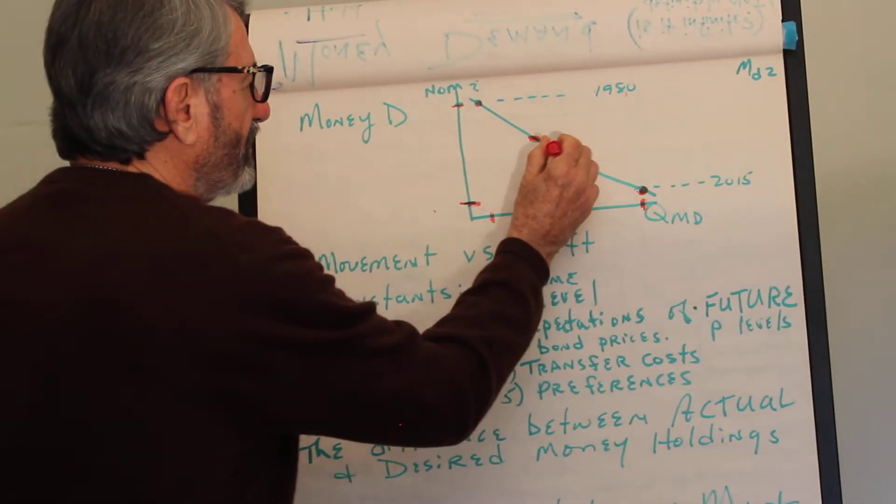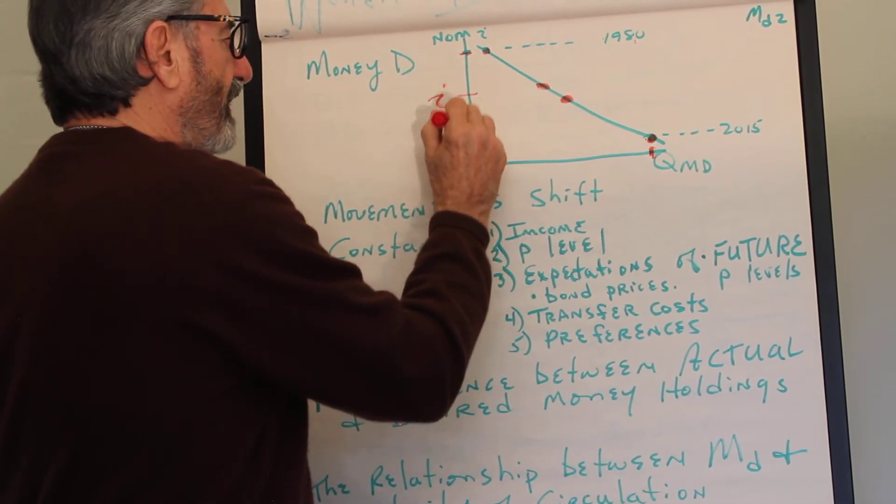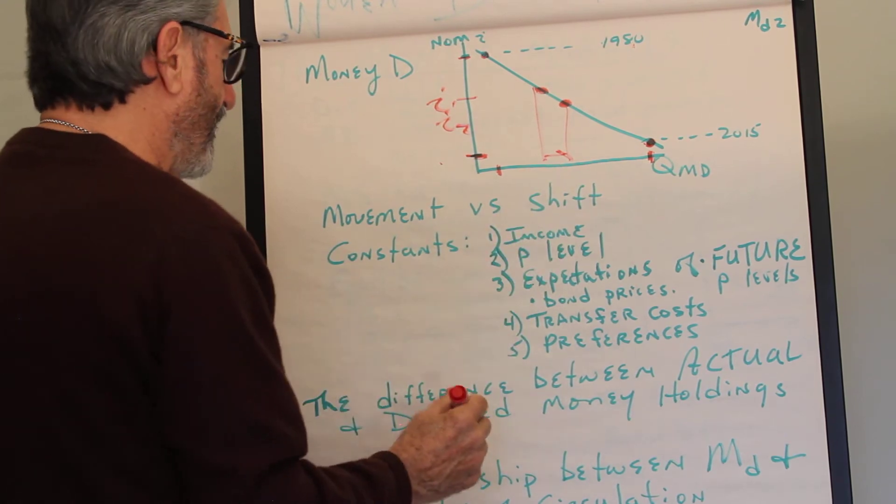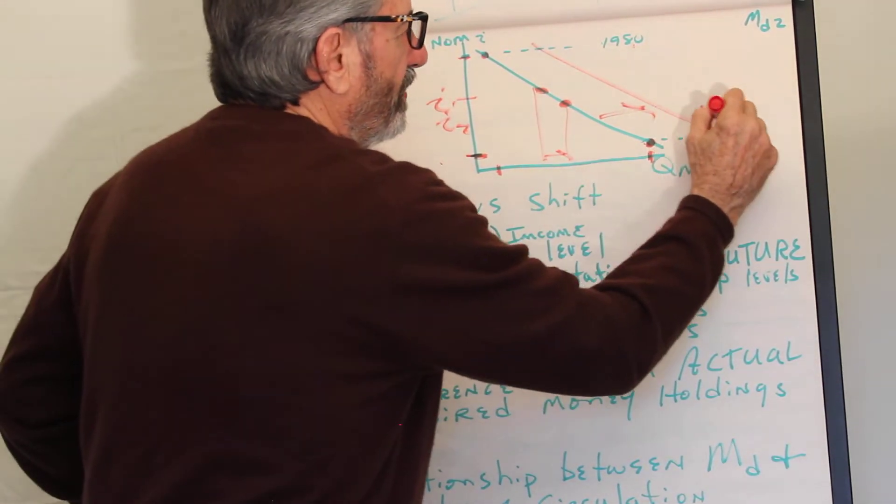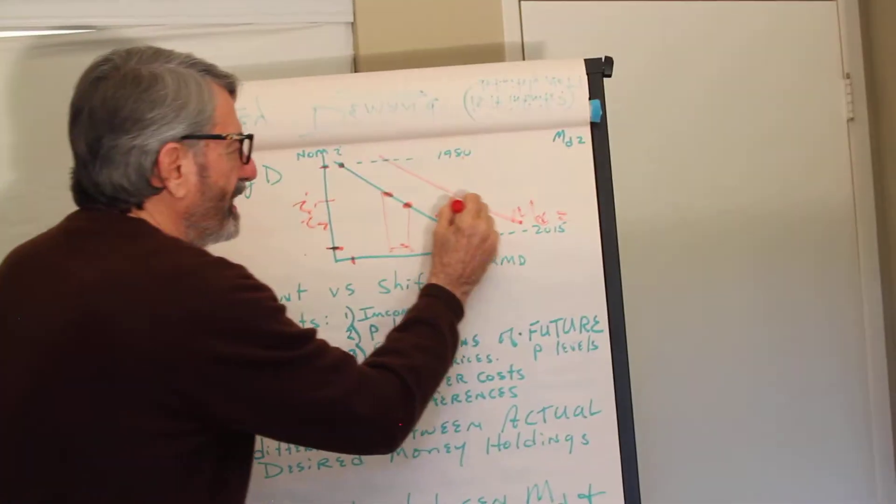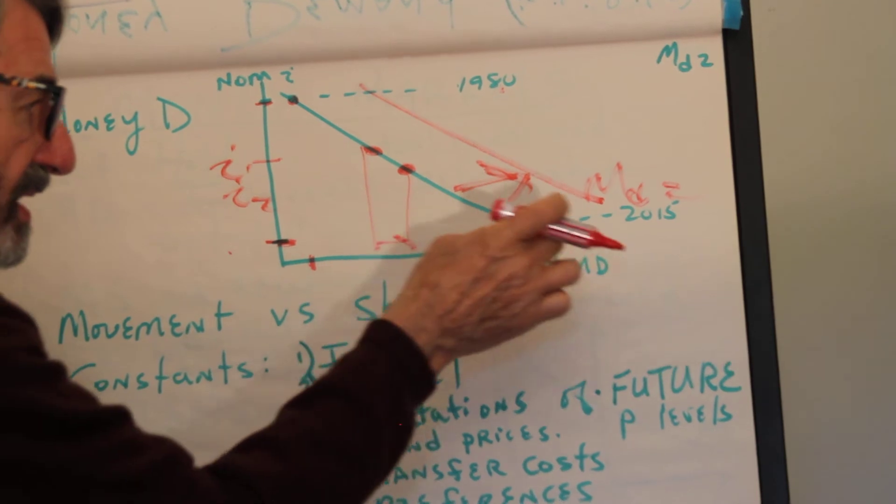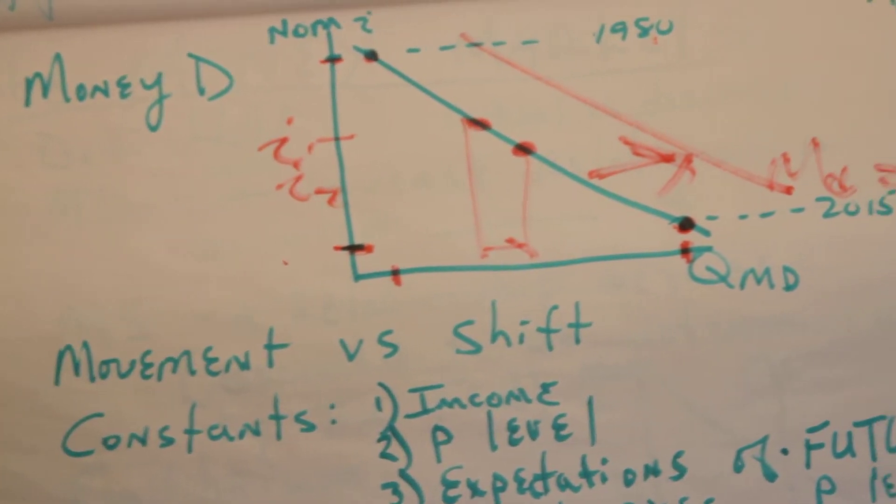So what causes this, which is a change in the quantity of money demanded? And the answer is a change in the interest rate from I1 to I2. Boom, boom, boom. That's what would cause that. But what would cause a change in money demand? That is a shift. Money demand 2. What would cause this? A change in one of the constants, one of the things that is assumed constant when we brought up this relationship between nominal interest and the quantity of money that people want to hold.